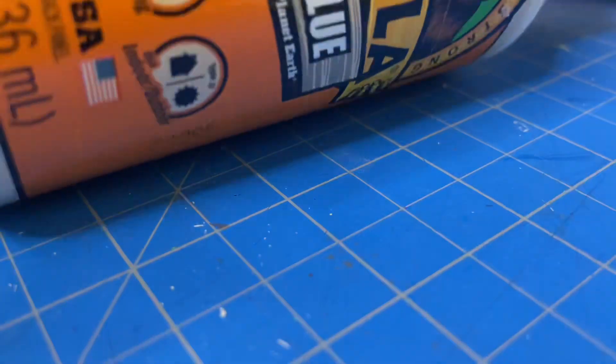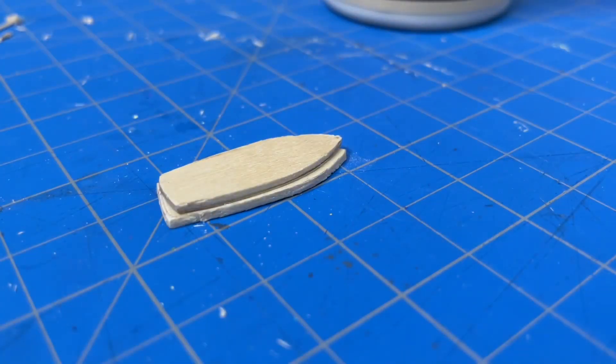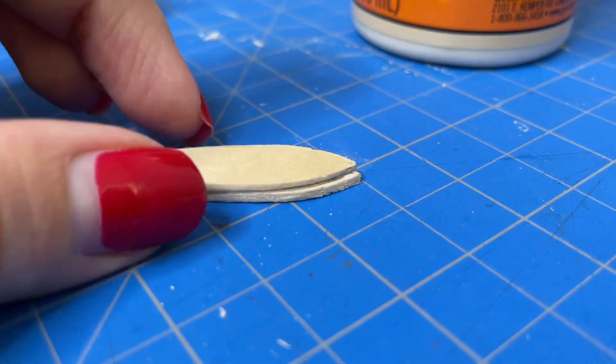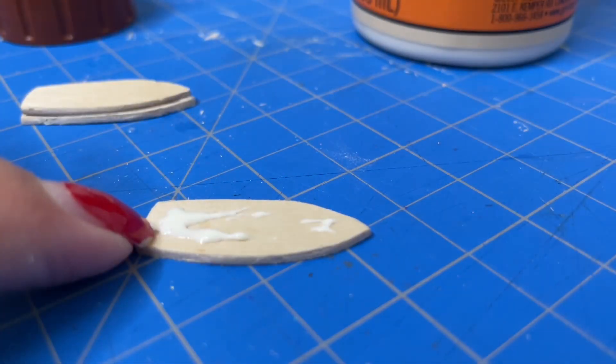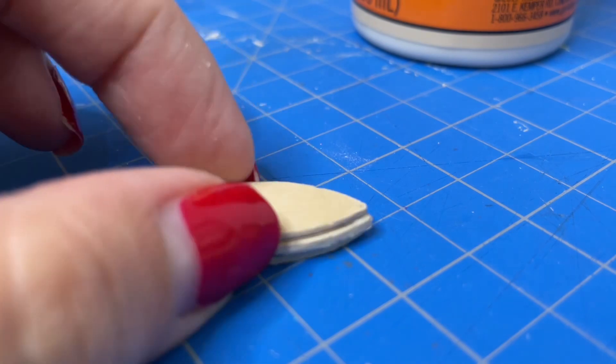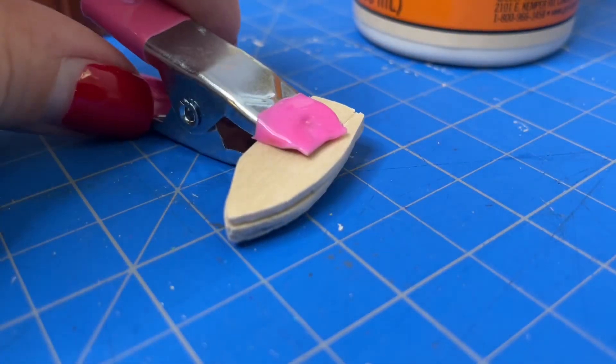And now that I have all the pieces cut out I'm going to use some of this Gorilla Wood Glue to glue all of the layers of wood together. I have a total of three pieces of wood. And these three layers got me to the thickness that I want for my boat. And then I'm going to stack all of these together and clamp them down and let it dry overnight.